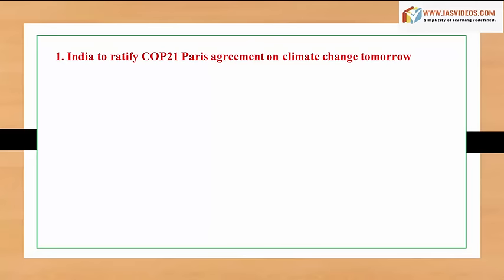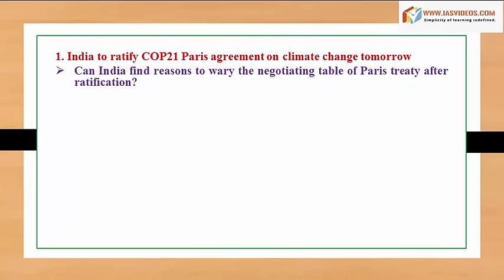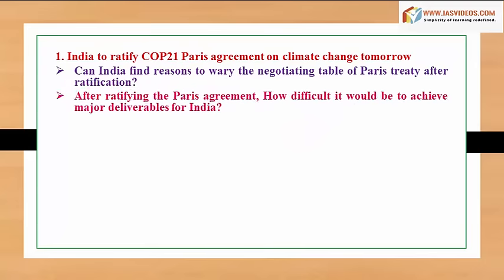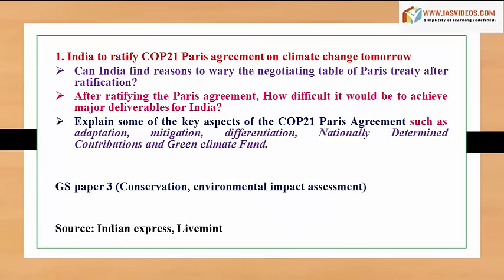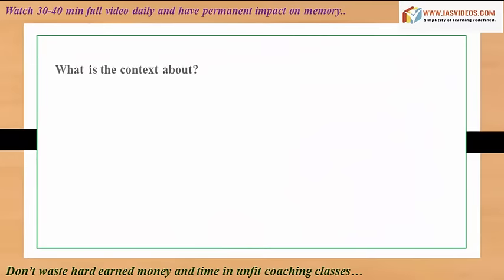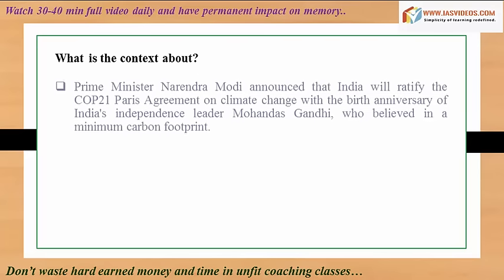India is set to ratify the COP 21 Paris Agreement on climate change. Key questions to consider: Can India find reasons to vary its position at the negotiating table after ratification? How difficult will it be to achieve major deliverables? This segment also explains key aspects of the Paris Agreement such as adaptation, mitigation, differentiation, nationally determined contributions, and the Green Climate Fund. Relevant to GS Paper 3: conservation and environmental impact assessment.